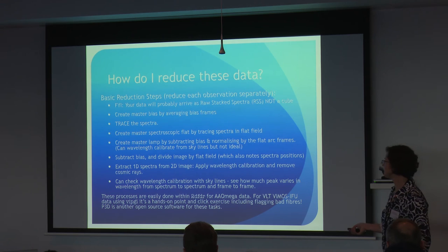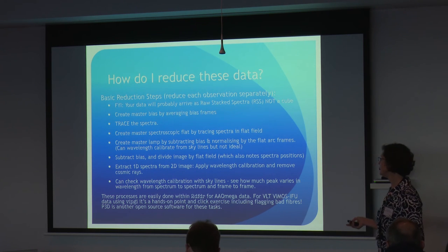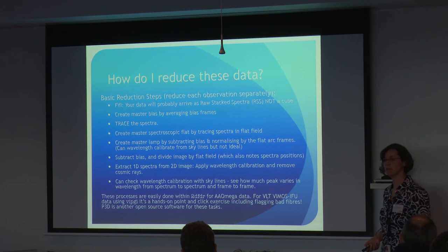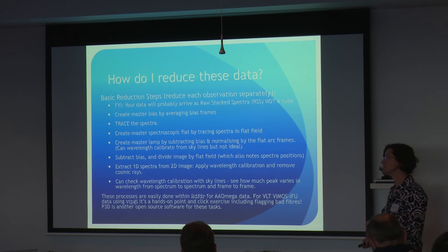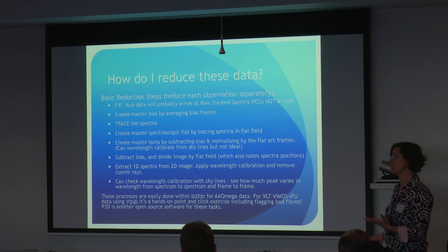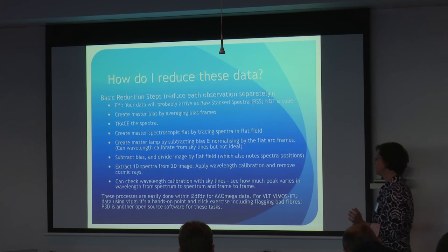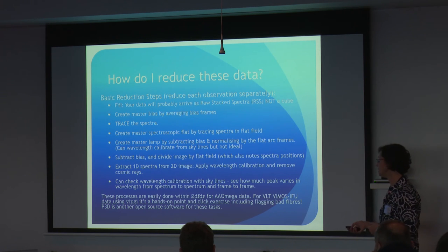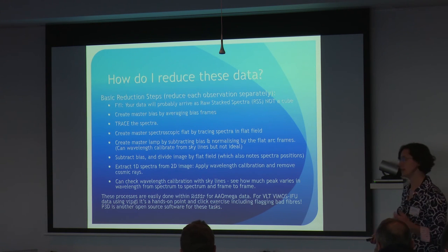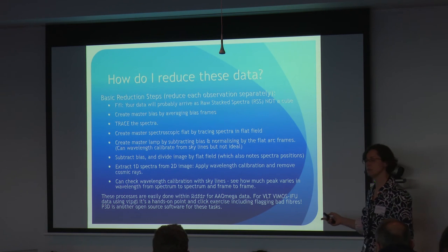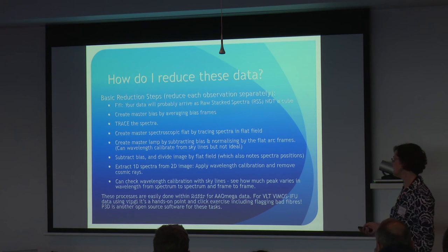Once you've traced the spectra, subtract the bias, divide by the flat field, extract the spectra, and perform wavelength calibration. You can check the wavelength calibration with skylines. In the blue, there's one significant skyline at 5577 angstroms - try and observe that, because it just makes life really easy. It should be at 5577 angstroms; if it isn't, something has gone wrong. In the red there are many more skylines, which is good and bad. For AAOmega, iKoala, and SAMI, these processes are easily done with the 2DFDR program.